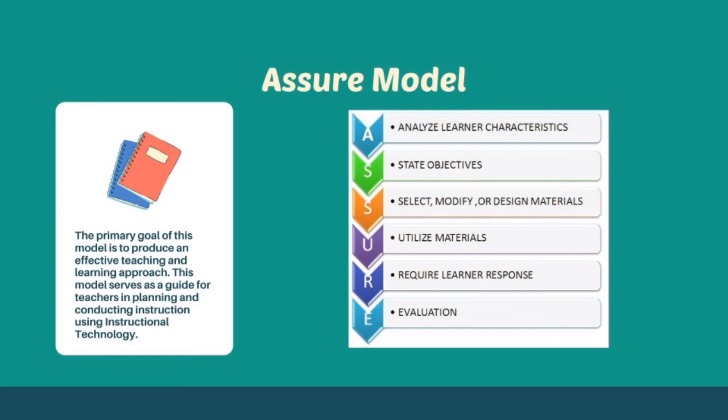The third phase is the selection of instructional materials that will support the delivery of content. There are three options: select, modify, or develop the materials. This is a crucial stage because wrong choice of materials may not result in effective learning. The fourth stage is the utilization of instructional materials in the teaching and learning process, where the teacher creates engaging learning activities using appropriate materials. The fifth stage of the ASSURE model is requiring learners' participation — the teacher creates engaging activities where students can actively participate in problem-solving and critical thinking.